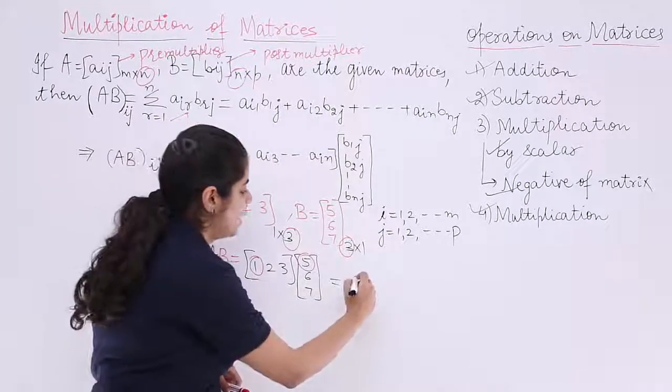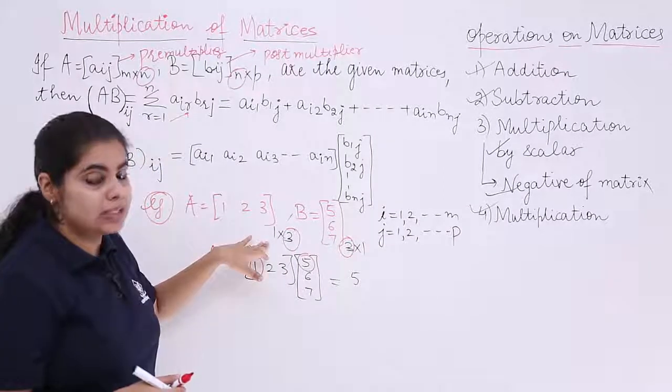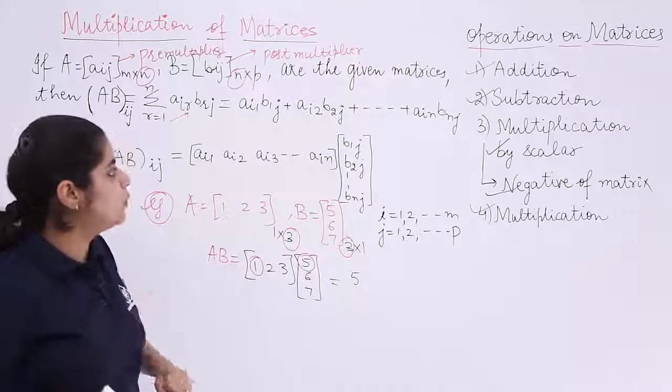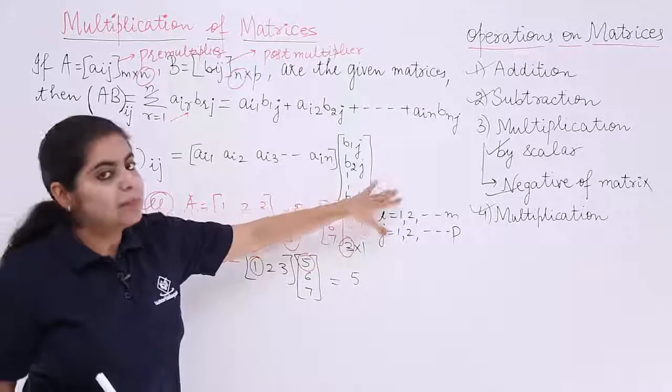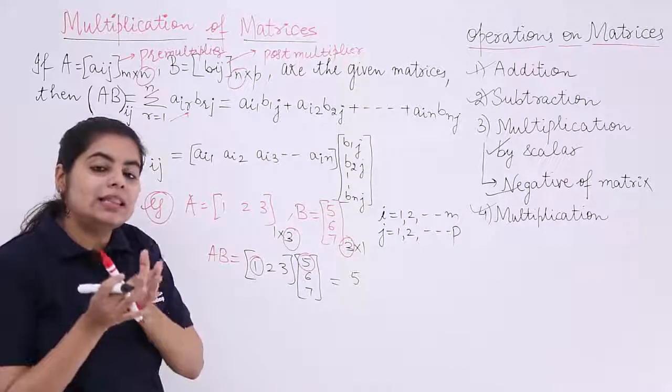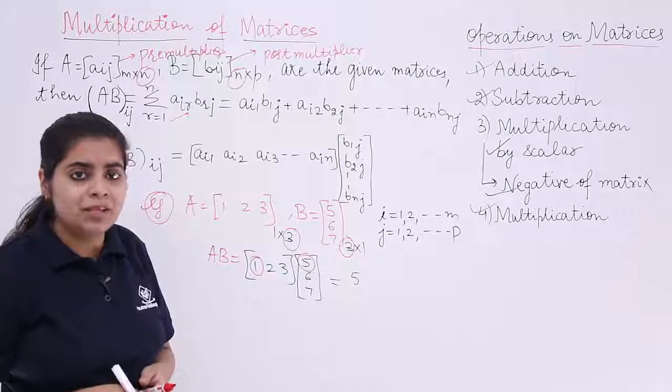What is 1 into 5? It is 5. And you also need to consider then the next elements. Let's see one more thing. When I multiply these two matrix, I will be getting another matrix and that single matrix will be having what order?